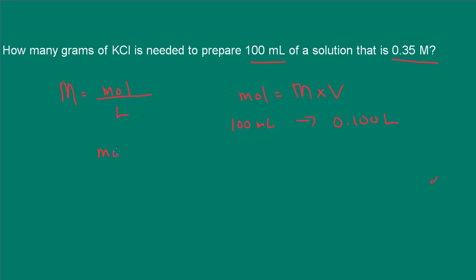So now we're ready to go. So the number of moles will be equal to the molarity, which is 0.35 moles per liter, times 0.1 liters. And that is going to be 0.035 moles.